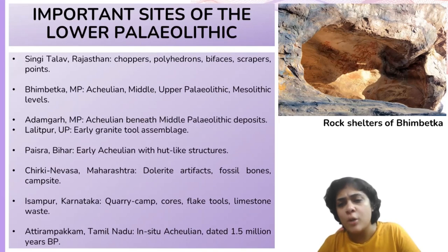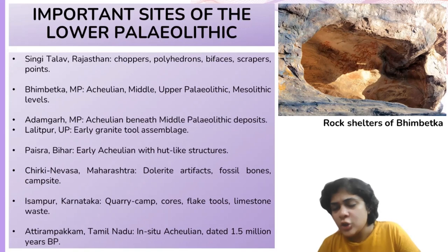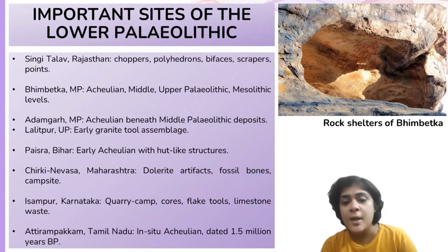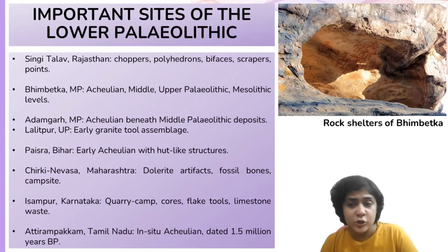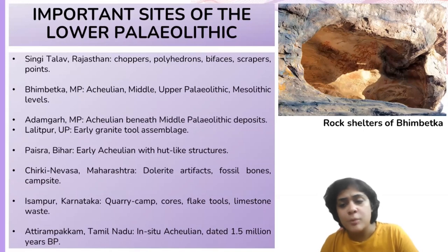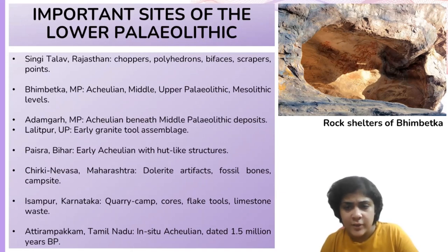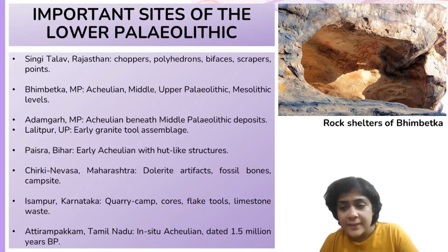Rock Shelter 3 at Bhimbetka in Madhya Pradesh has yielded artifacts from the Acheulian, Middle Paleolithic, Upper Paleolithic, and Mesolithic periods. Adamgarh in Madhya Pradesh has also revealed an Acheulian layer beneath the Middle Paleolithic deposits. Lalitpur in Jhansi, Uttar Pradesh, has produced early in-situ assemblages composed of granite tools. Paisra in the Munger district of Bihar has provided evidence of an early Acheulian assemblage. Chirki-Nevasa in Maharashtra has unearthed dolerite artifacts along with fossilized bones of wild cattle and other animals.